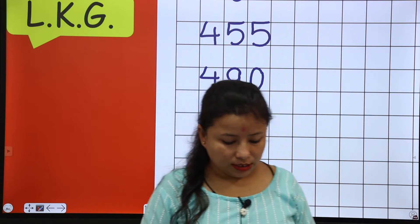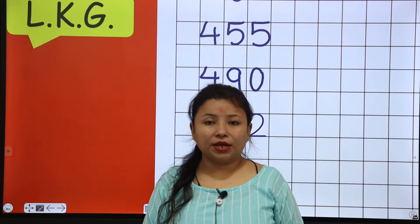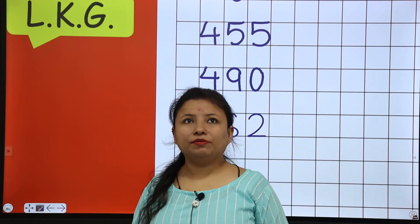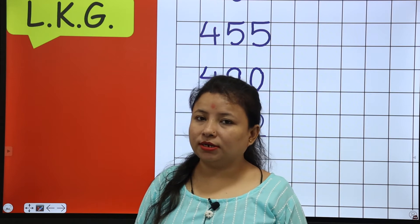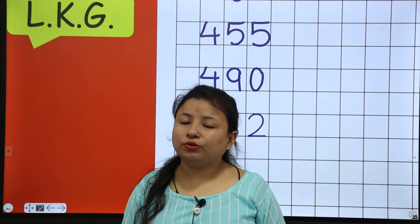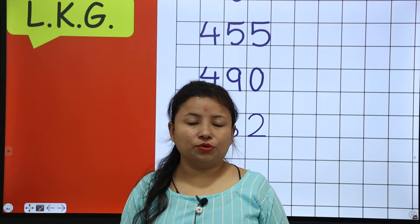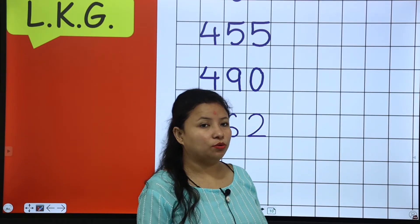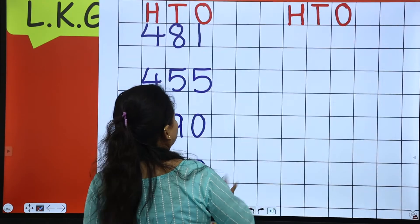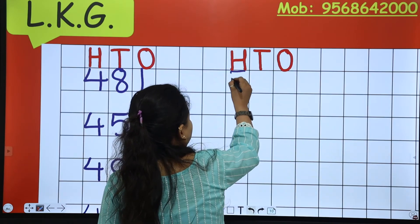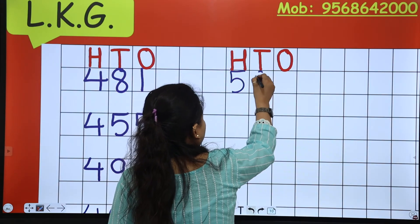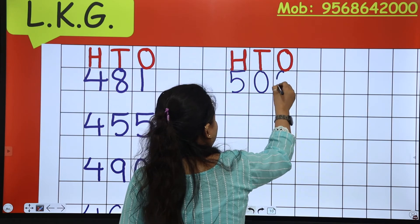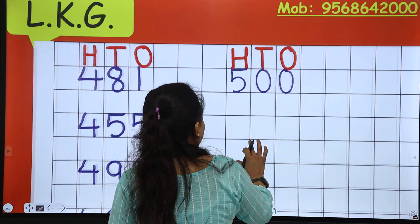So the next number is 500. Like 100, 200, 300 — so you have to write 500. It means 5, 0, 0 — that is 500. So 5, 0, and again 0. That is 500.